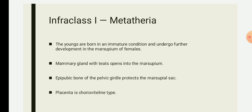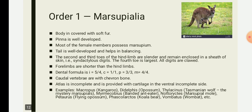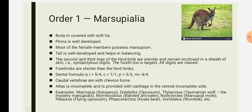Members of infraclass one, Metatheria, are confined to the Australian regions only; all living species are found in Australia. Metatheria is further classified into order one, Marsupialia. The young ones are born immature. Most of the characters of Marsupialia are similar to those of Metatheria.